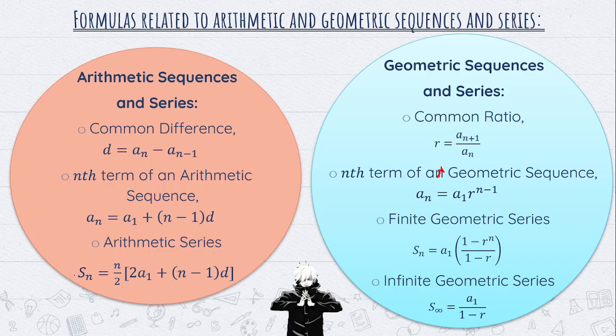To recap: the red or first set of formulas are for arithmetic sequence and series, and the blue or second set are for geometric sequences and series. For both common difference and common ratio, the two terms used must be consecutive terms from the sequence — whether arithmetic or geometric. For example, you can use a sub 1 and a sub 2, but not a sub 1 and a sub 5 since they are not consecutive.